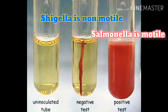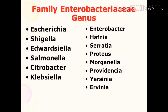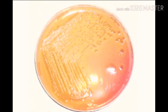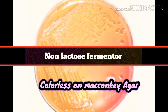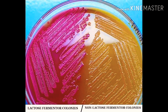Salmonella belongs to the Enterobacteriaceae family and does not ferment lactose. That's why it appears as transparent colonies on MacConkey agar, differentiated from lactose-fermenting Enterobacteriaceae, which appear as pink colonies on MacConkey agar.